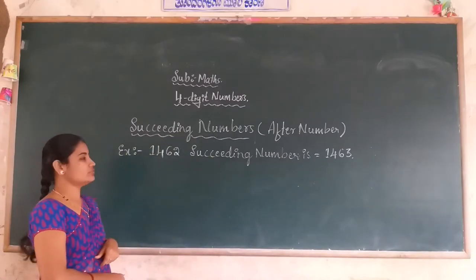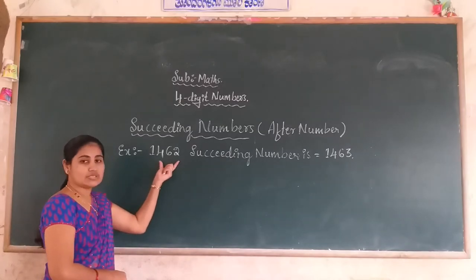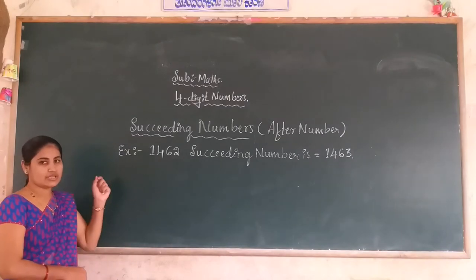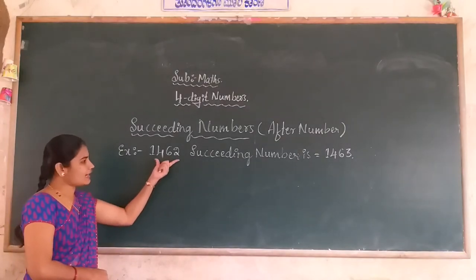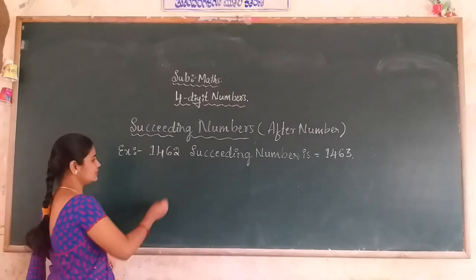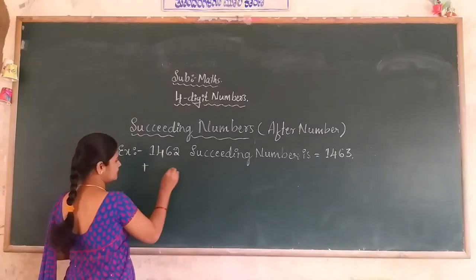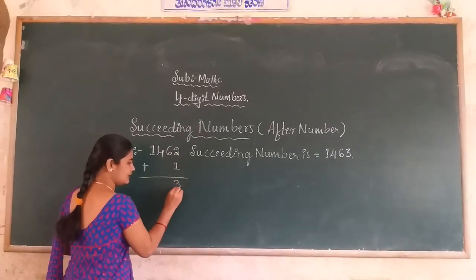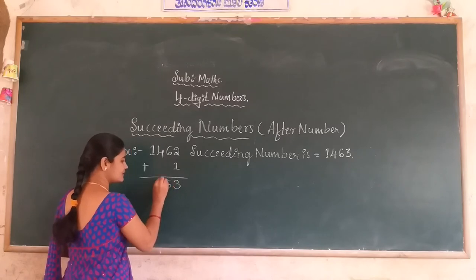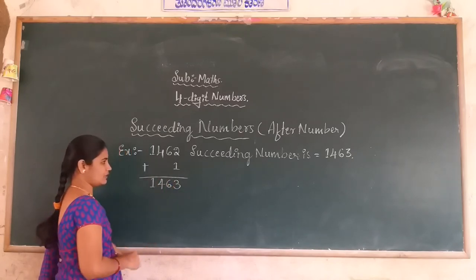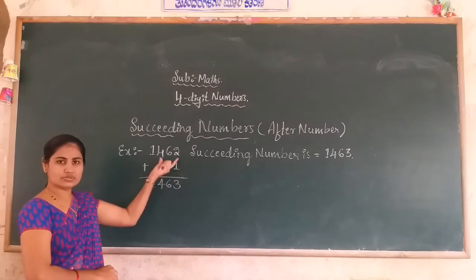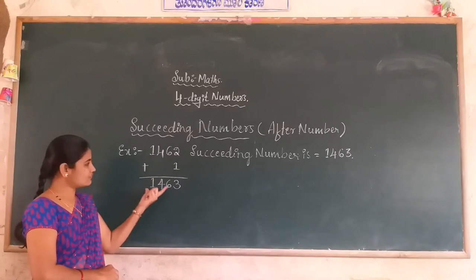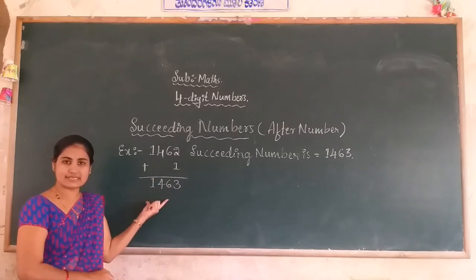Here is another suggestion — an easy method. You can add plus 1 to the given number to easily get the succeeding number. Add plus 1: 2 plus 1 is 3, and the remaining digits stay the same because we only add 1 to the unit place. This is one easy method to find the succeeding number.